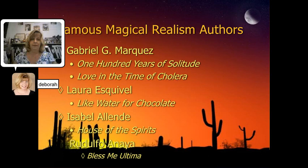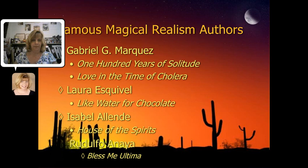Some of the most famous authors in this category include Gabriel Garcia Marquez — we'll be reading at least two of his short stories. He's most famous for winning the Nobel Prize for 100 Years of Solitude, and a few of his books have been turned into movies, such as Love in the Time of Cholera. Laura Esquivel, who wrote Like Water for Chocolate, also converted to film. Isabel Allende, whose most famous novel is House of the Spirits. And Rudolfo Anaya, who wrote Bless Me, Ultima. These and other authors constitute some of the Hispanic authors who use the magical realism genre.